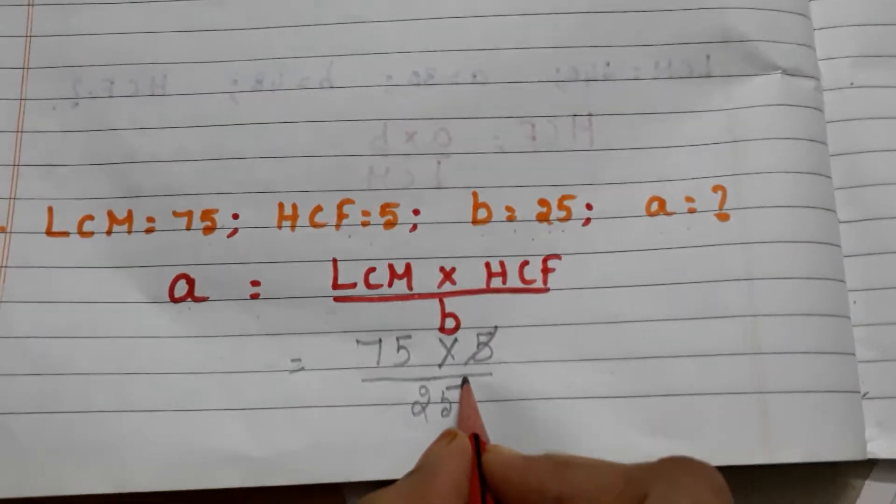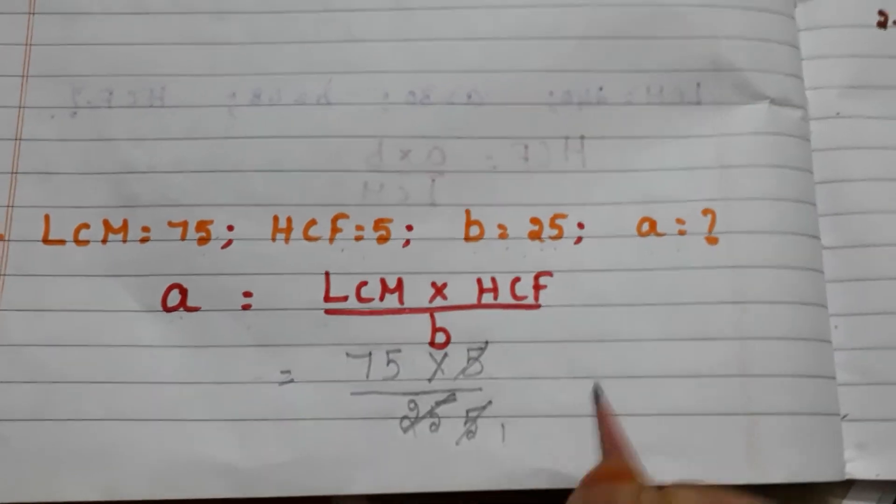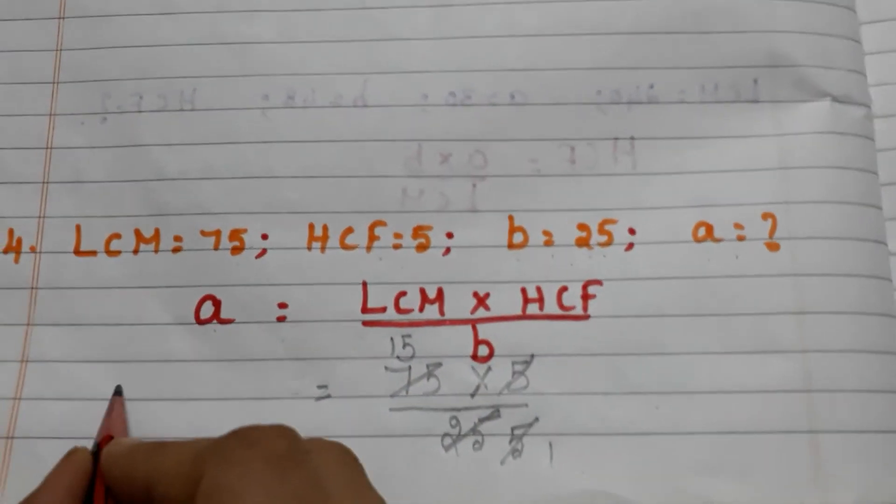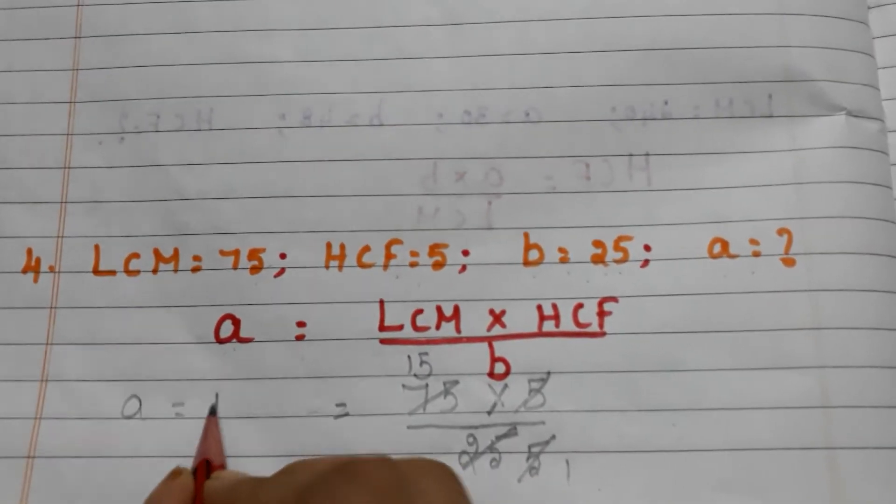5 ones are 5, 5 fives are 25, and 5 ones are 5, 5 fifteens are 75. So the first number a equals 15.